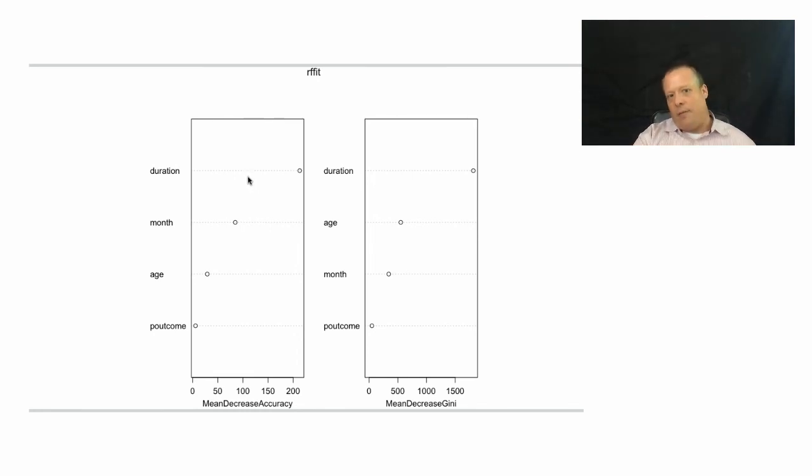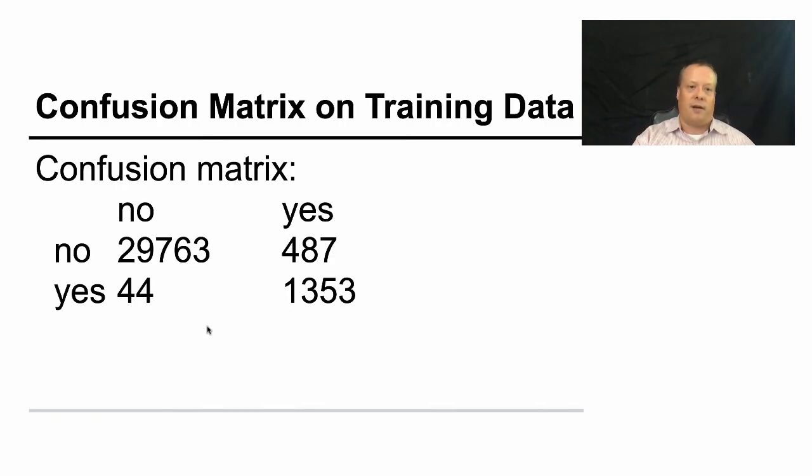And so duration winds up, that duration variable of the previous call winds up being the most important. Month is the second most important. That's similar to what we saw in the decision tree. And then age and then previous outcome. And previous outcome has almost no effect, so it's not really that important.